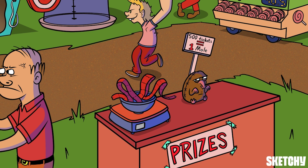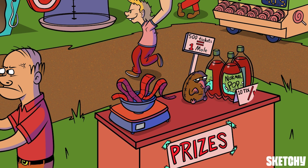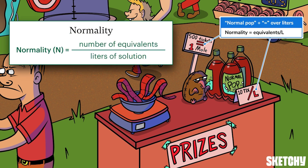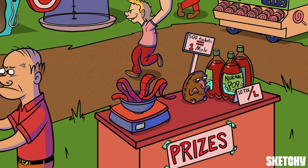Liter bottles of the town's locally produced soda, Normal Pop, remind you of normality, which is the number of equivalents per one liter of a solution — sort of like how this pop is 10 tickets per liter. Normality can be calculated by dividing the number of equivalents for a component by the liters of solution — that's why we see an equal sign over the liter bottles. Keep in mind that because equivalents are specific to a reaction, by default normality is as well.